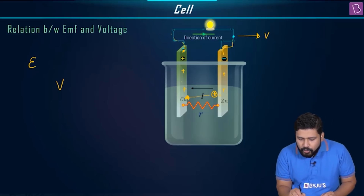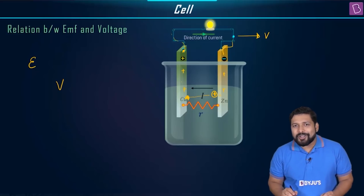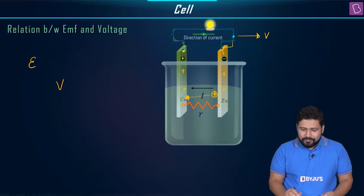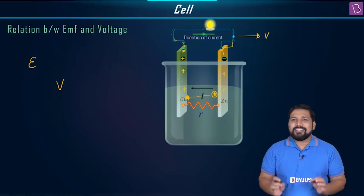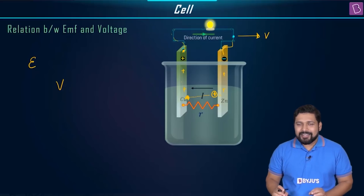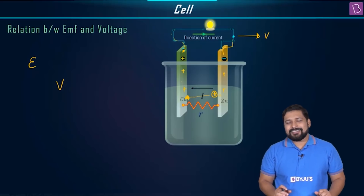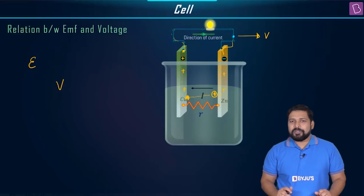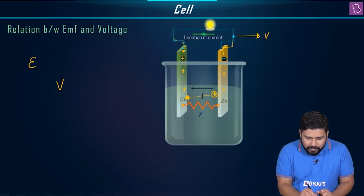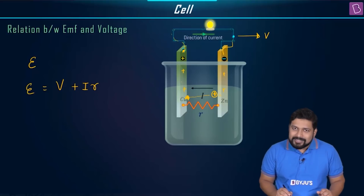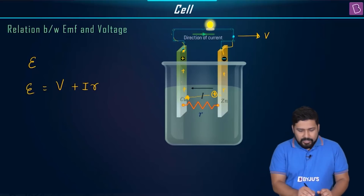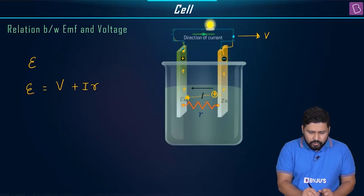How much extra work do you require? You require work to move between the terminals inside the cell. If I is the current and r is the internal resistance, you require plus I×r. So what you get is E = V + Ir. This is the relation between E and V.